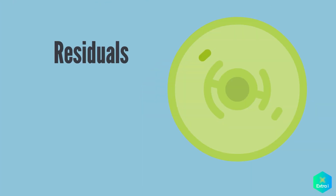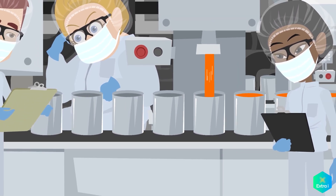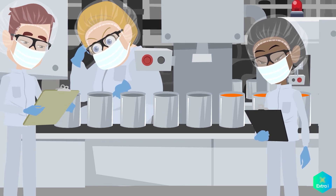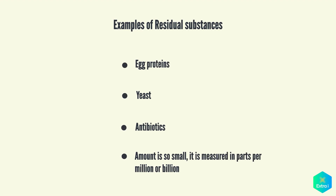Residuals are tiny amounts of various substances used during manufacturing or production of vaccines that are not active ingredients in the completed vaccine. Substances will vary depending on the manufacturing process used and may include egg proteins, yeast, or antibiotics. Residual traces of these substances, which may be present in a vaccine, are in such small quantities that they need to be measured as parts per million or parts per billion.